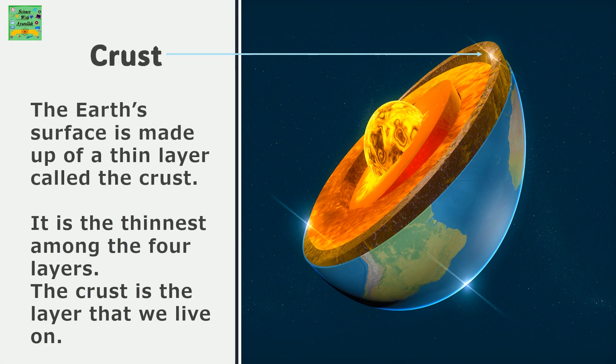The earth's surface is made up of a thin layer called the crust. It is the thinnest among the four layers. The crust is the layer that we live on.